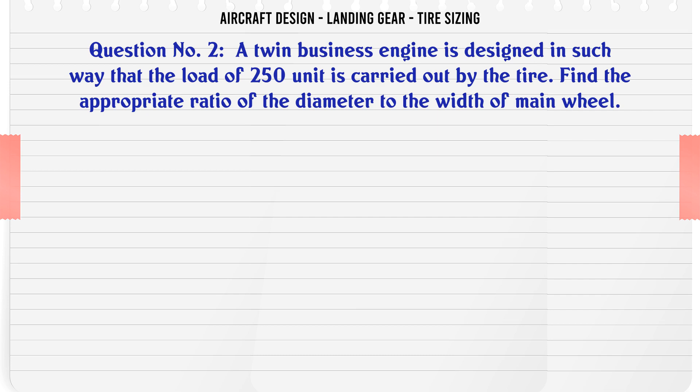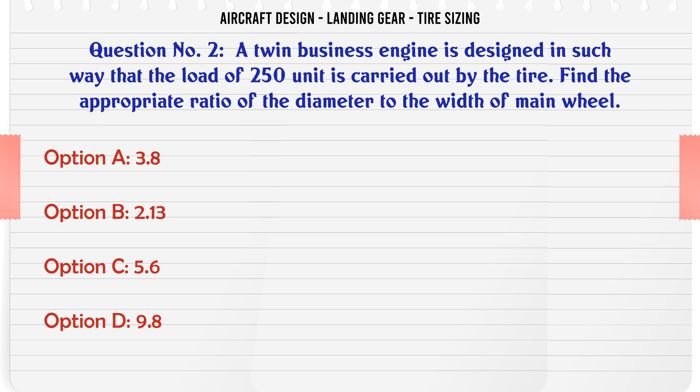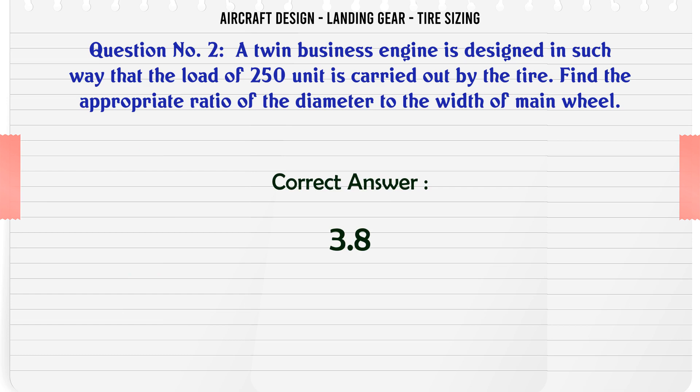A twin business engine aircraft is designed such that the load of 250 units is carried by the tire. Find the appropriate ratio of the diameter to the width of the main wheel. A) 3.8, B) 2.13, C) 5.6, D) 9.8. The correct answer is 3.8.